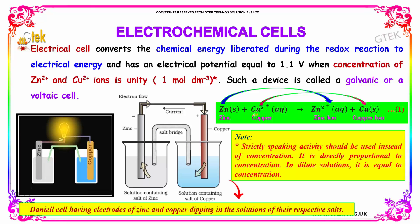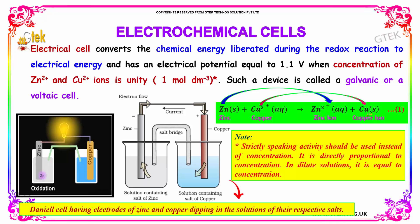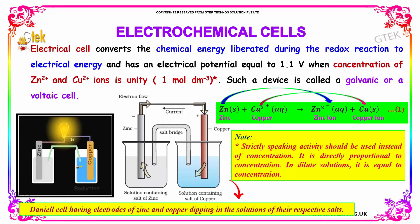Zinc plus copper 2+ ions will give zinc ions and copper. I am trying to show you Daniell's cell, having the electrodes of zinc and copper dipping in the solution of their respective salts.